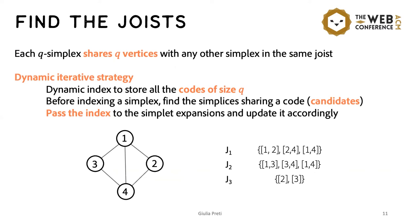In order to apply the rule inflate, we need to know all the joists in a simplet. And here, to avoid the redundant calculations, we pass the joist from a simplet to its extensions and update them accordingly.